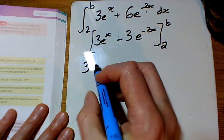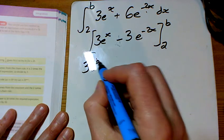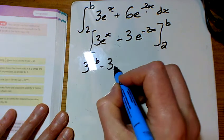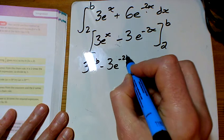We're evaluating between 2 and b, so I've got 3e^b minus 3e^(-2b).